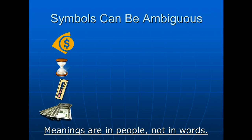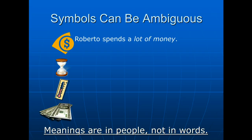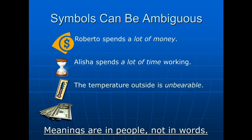Symbols can be ambiguous. Remember, the meanings are in the people, not in the words themselves. If we say 'Roberto spends a lot of money,' that is ambiguous because we don't necessarily agree what 'a lot of money' might mean. 'Alicia spends a lot of time working' — again, ambiguous. 'The temperature outside is unbearable' conveys a feeling, but my unbearable and your unbearable may be quite different. 'That car is too expensive' depends on who's saying it and who's hearing it.